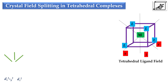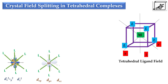In case of transition metal ion, there are two sets of d orbitals. The first set is dx²-y² or dz², termed as e orbitals, where the lobes of the orbitals are along the axis. The second set is dxy, dyz, and dxz, termed as t2 set of orbitals, where the lobes of the orbitals are in between the axis.